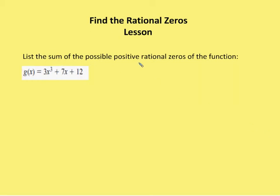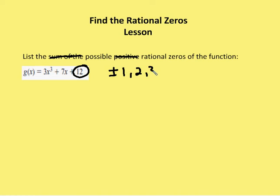List the sum of the possible positive rational zeros of the function. Let's just list all of the rational zeros for the function. I have the factors of the constant — plus or minus — and my constant is 12. Plus or minus one, two, three, four, six, and twelve.